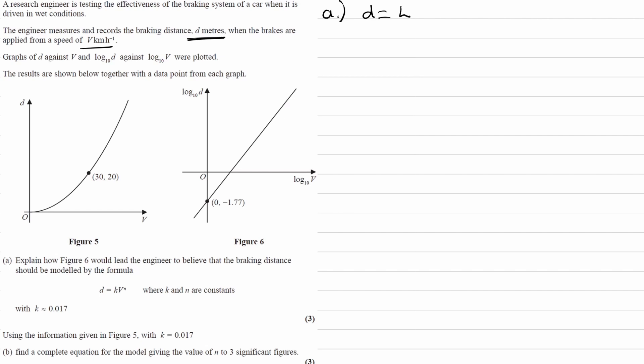So d equals kv to the power of n. We need to break down the right hand side here. We can use the multiplication rule, so the k multiplied by v to the power of n becomes log k plus log v to the power of n.